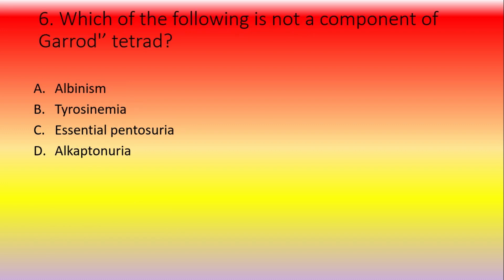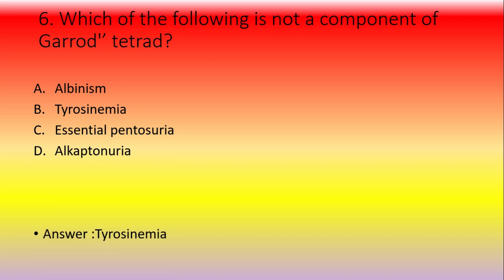Which of the following is NOT a component of Garrod's tetrad? Option A: albinism, option B: tyrosinemia, option C: essential pentosuria, option D: alkaptonuria. The answer is tyrosinemia — it is not part of Garrod's tetrad.